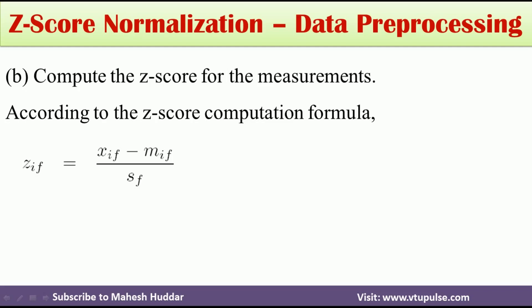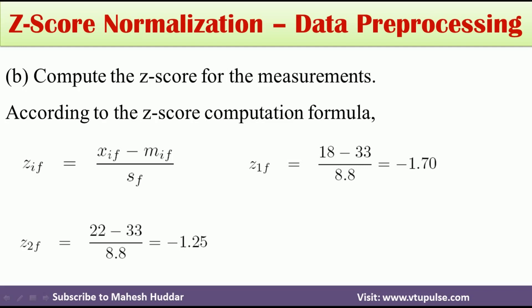The first z-score, z1f, equals (18 − 33) / 8.8, which is −1.70. The second z-score is (22 − 33) / 8.8, which equals −1.25. The third z-score is (25 − 33) / 8.8, where 25 is the third value, 33 is the mean, and 8.8 is the mean absolute deviation, giving −0.91.